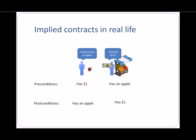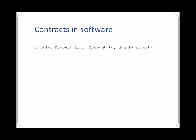If either of these statements is not true, then something has gone wrong. To apply this concept to software, consider a function that transfers money between bank accounts. A precondition to transferring money might be that the amount to transfer is greater than zero and also that the from-account contains enough money to satisfy the transfer.